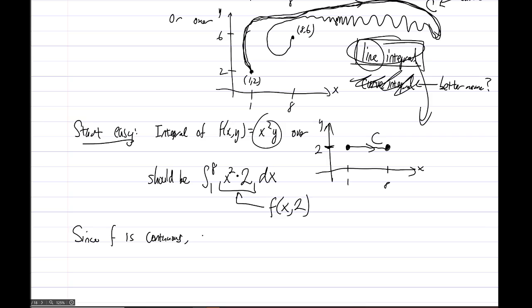So since f is continuous, I'm trying to warm you up to the idea of what's going on with this line integral thing. The integral of the same function f, x²y, over, and then I'm going to draw a picture. So 1, 8, there's 2 again, I guess I'll get 6 in here. Now I'm going to connect this point (1,2) to the point (8,2) again, but not with a straight line segment. I'm going to connect it, not quite even a line segment, very wiggly, like that.